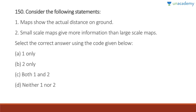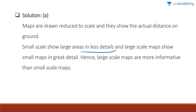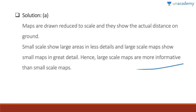Question 150: Maps show the actual distance on ground — yes, they do. Small scale maps give more information than larger scale maps — wrong, this is a common misconception. Answer is A, one only. Small scale shows large areas in less detail, and large scale maps show small areas in great detail. Larger scale maps are more informative than small scale maps.